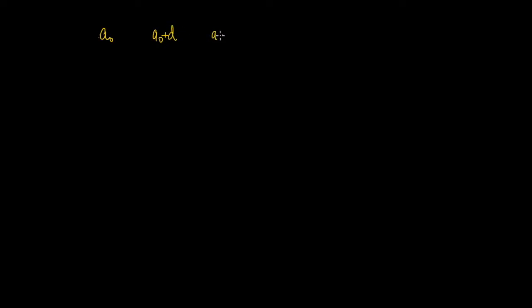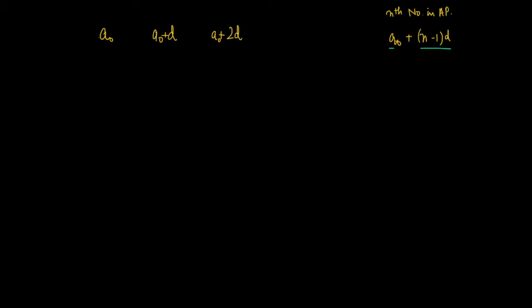An AP has the form: a₀, then a₀ + D, then a₀ + 2D, and so on. The nth term in an AP is of the form a₀ + (n−1)D. If you're unsure how this comes about, go have a look at the previous video, which explains why we write it in this format and what a₀ and D signify.